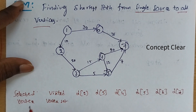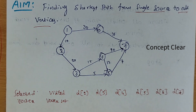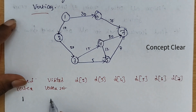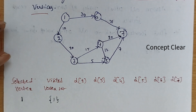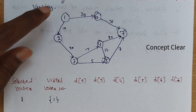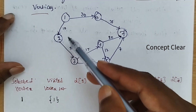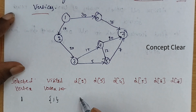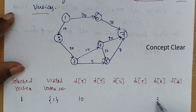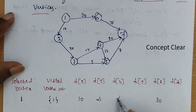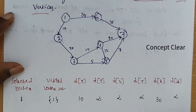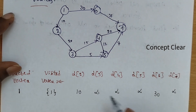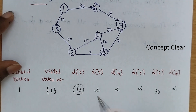I am selecting source as vertex 1. So the selected vertex is 1, and visited is 1. The possible edges from vertex 1 are: 1 to 2 with cost 10, and 1 to 6 with cost 30. The remaining vertices are not visited, so all are infinity. Among 30 and 10, the least is 10, so I am selecting 10 — moving from 1 to 2.